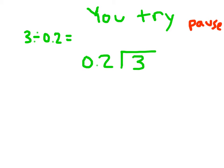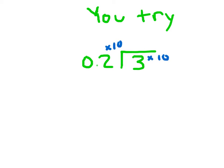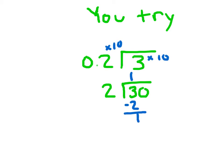Alright — we moved our decimal point by multiplying by 10, because we only need to move it one place to clear that decimal point so that we're working with 2 instead of 0.2 as our divisor. So we rewrite that, and 3 times 10 is 30. 2 goes into 3 one whole time. 1 times 2 is 2. 3 minus 2 is 1. Bring down the 0. 10 divided by 2 is 5 because 5 times 2 is 10.